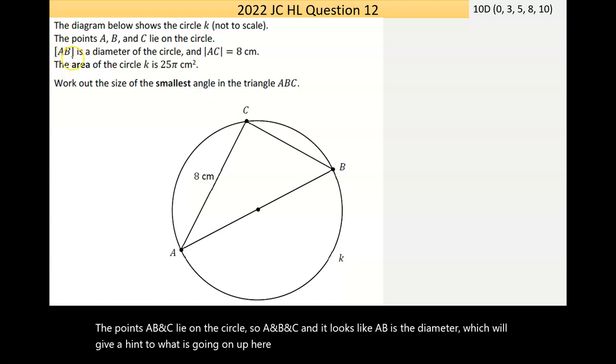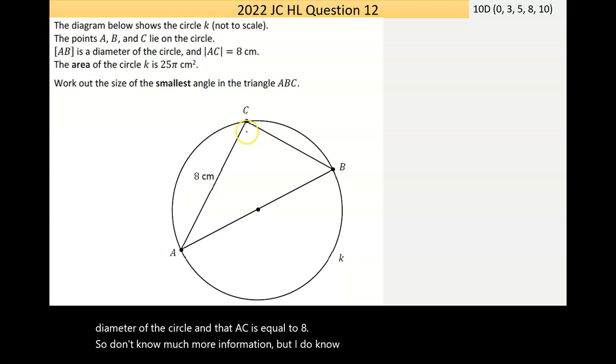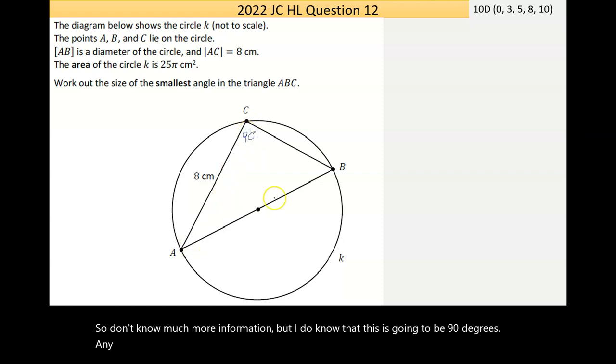It tells me that the length of AB is the diameter of the circle, and that AC is equal to 8. So I don't know much more information, but I do know that this is going to be 90 degrees. Any angle of the diameter gives 90 degrees. So this is a right angle triangle.